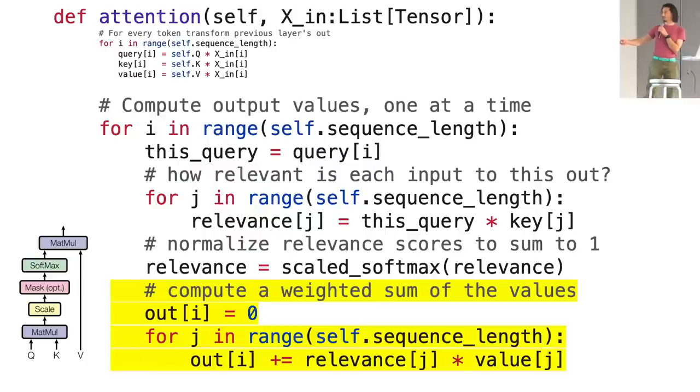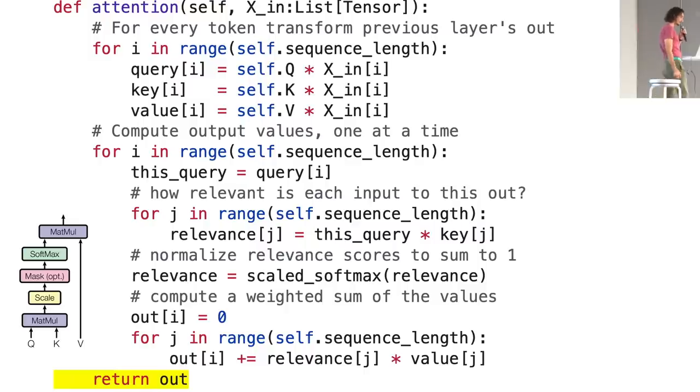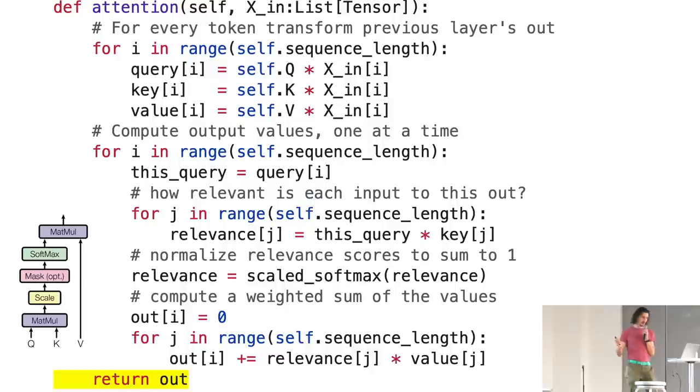So you can sensibly use that to compute a weighted sum of all of the values. So now you just go through, for each output, you go through each of the input tokens, the value score, which is calculated for them, and you multiply it by the relevance. This is just a floating point number from zero to one. And you get a weighted average, which is the output, and you return that. So this is what's going on in the attention mechanism, which can be pretty confusing when you just look at a diagram like that. But I hope this explains it a little bit.